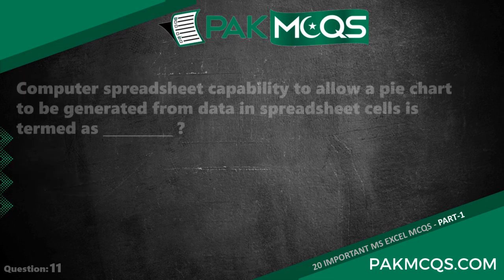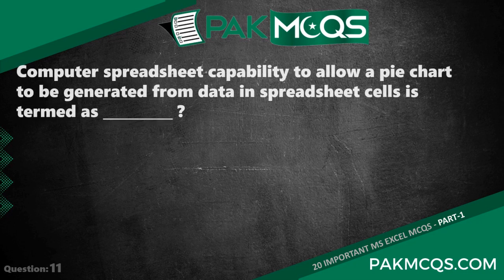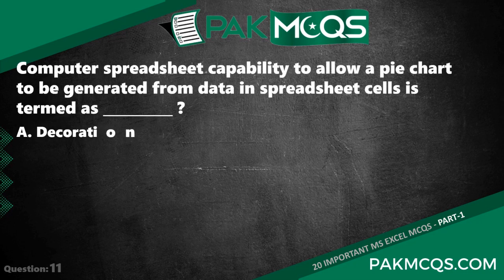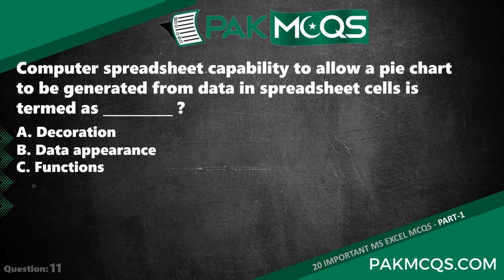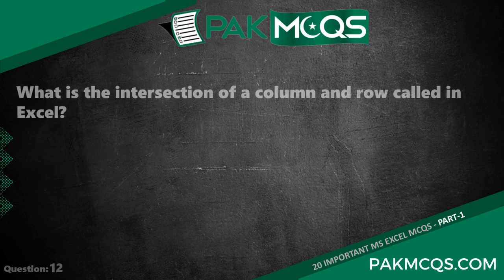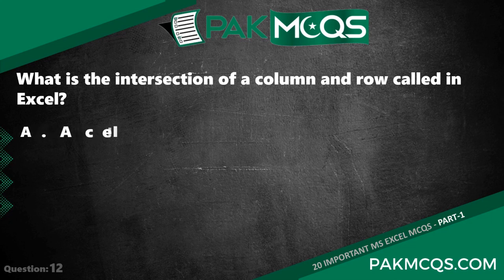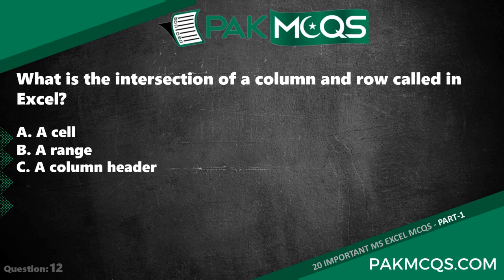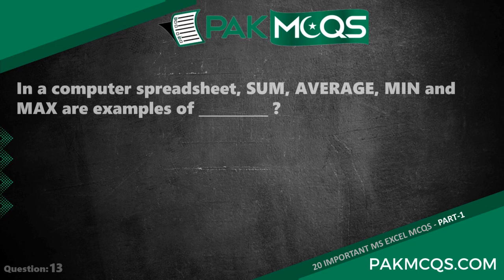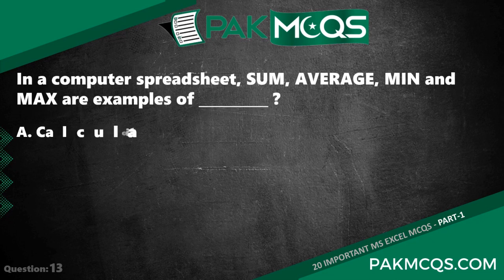500. The computer spreadsheet capability to allow a pie chart to be generated from data in spreadsheet cells is termed as charting. What is the intersection of a column and row called in Microsoft Excel? A cell.